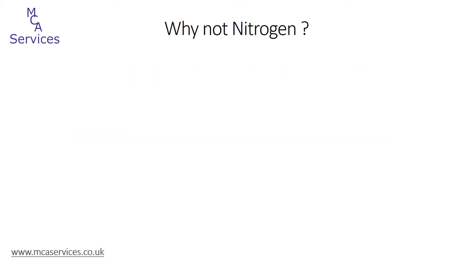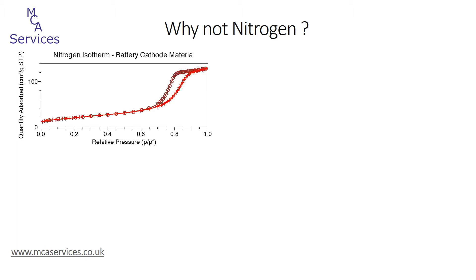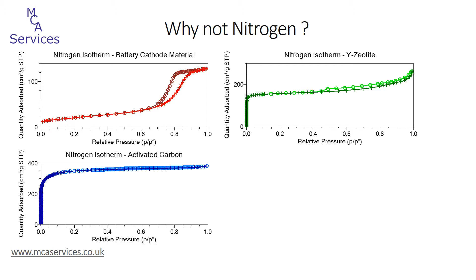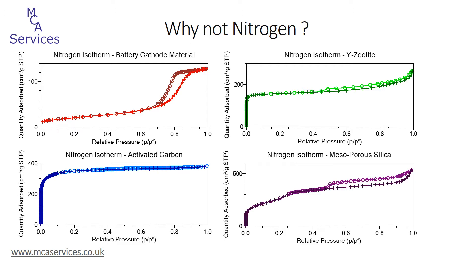So the first question is: why would we use something other than nitrogen? The majority of gas adsorption analyses use nitrogen as the adsorbate, and for very good reasons. Some examples of nitrogen adsorption-desorption isotherms are for battery cathode materials — this is a high area metal oxide — zeolites, this is a Y-type zeolite, activated carbons, and even a mesoporous silica.